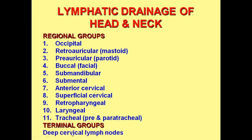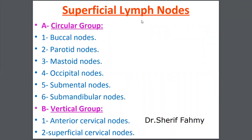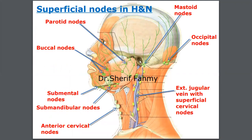Then we have the terminal group, which is nothing but the deep cervical group of lymph nodes. The external acoustic meatus: in front of the ear we call it pre-auricular, also called parotid. Near the buccinator muscle, close to the cheek, we have the buccal group of lymph nodes. Below the chin we have submental group; below the mandible bone we have submandibular group. In front of the neck, anterior cervical group. At the occipital bone, occipital group. Behind the ear, posterior auricular also called mastoid group of lymph nodes.